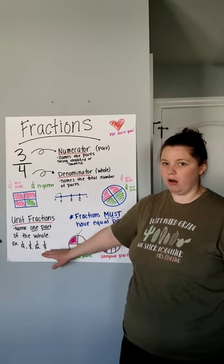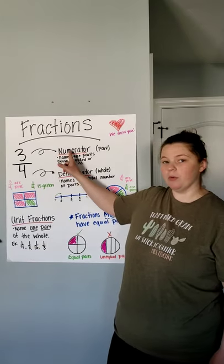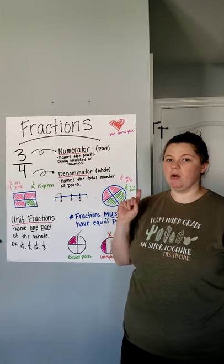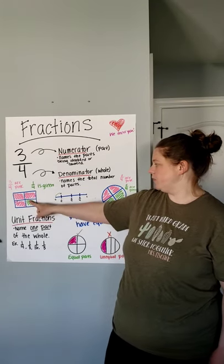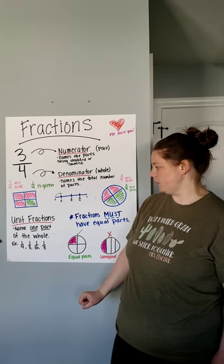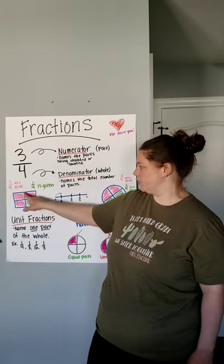Now, if you notice, all of these have one thing in common, and that's that the numerator, the number on top, is always going to be a one for your unit fractions. So, a unit fraction for this would be one-fourth because it's naming one piece, and we have four total.